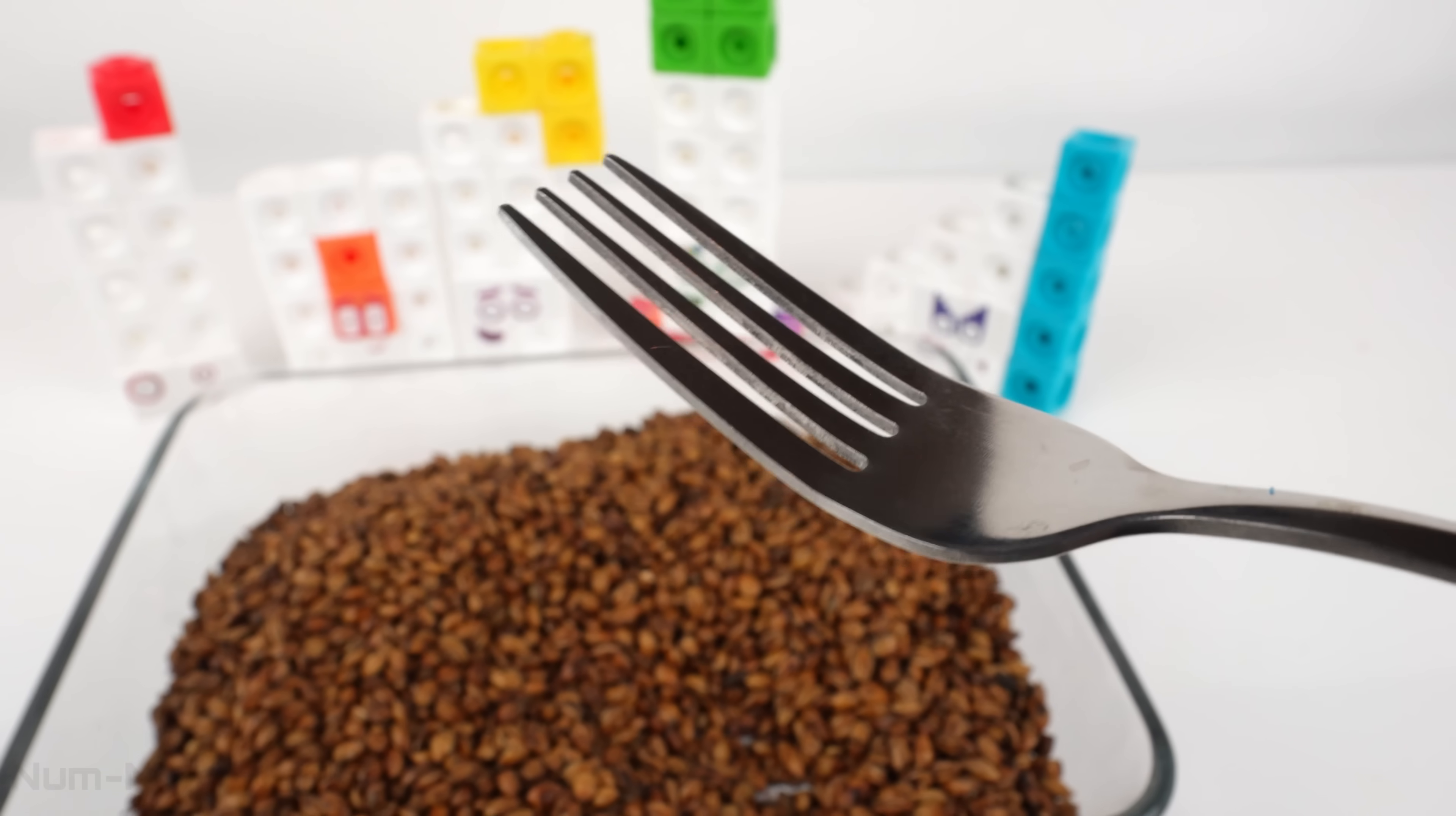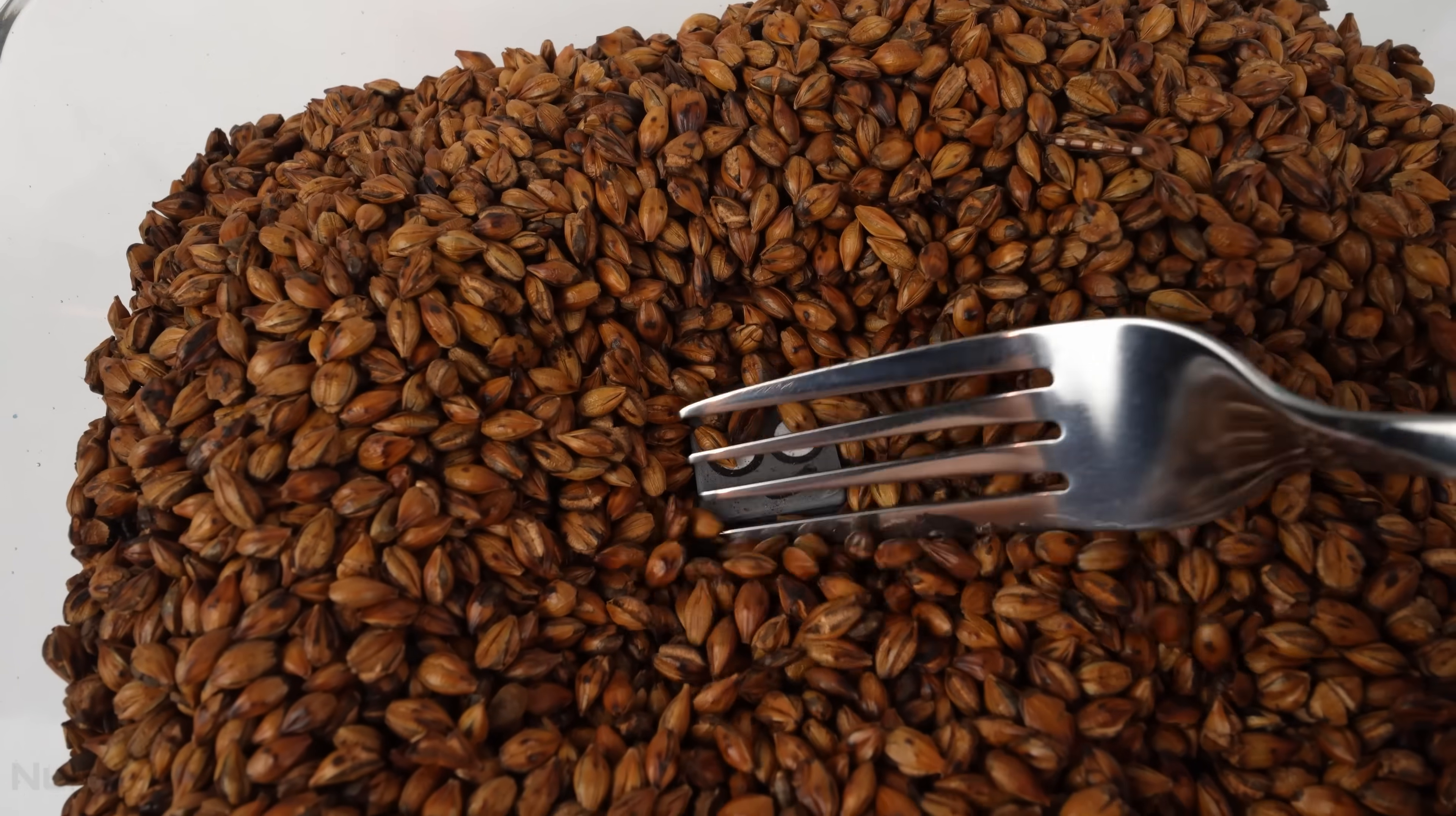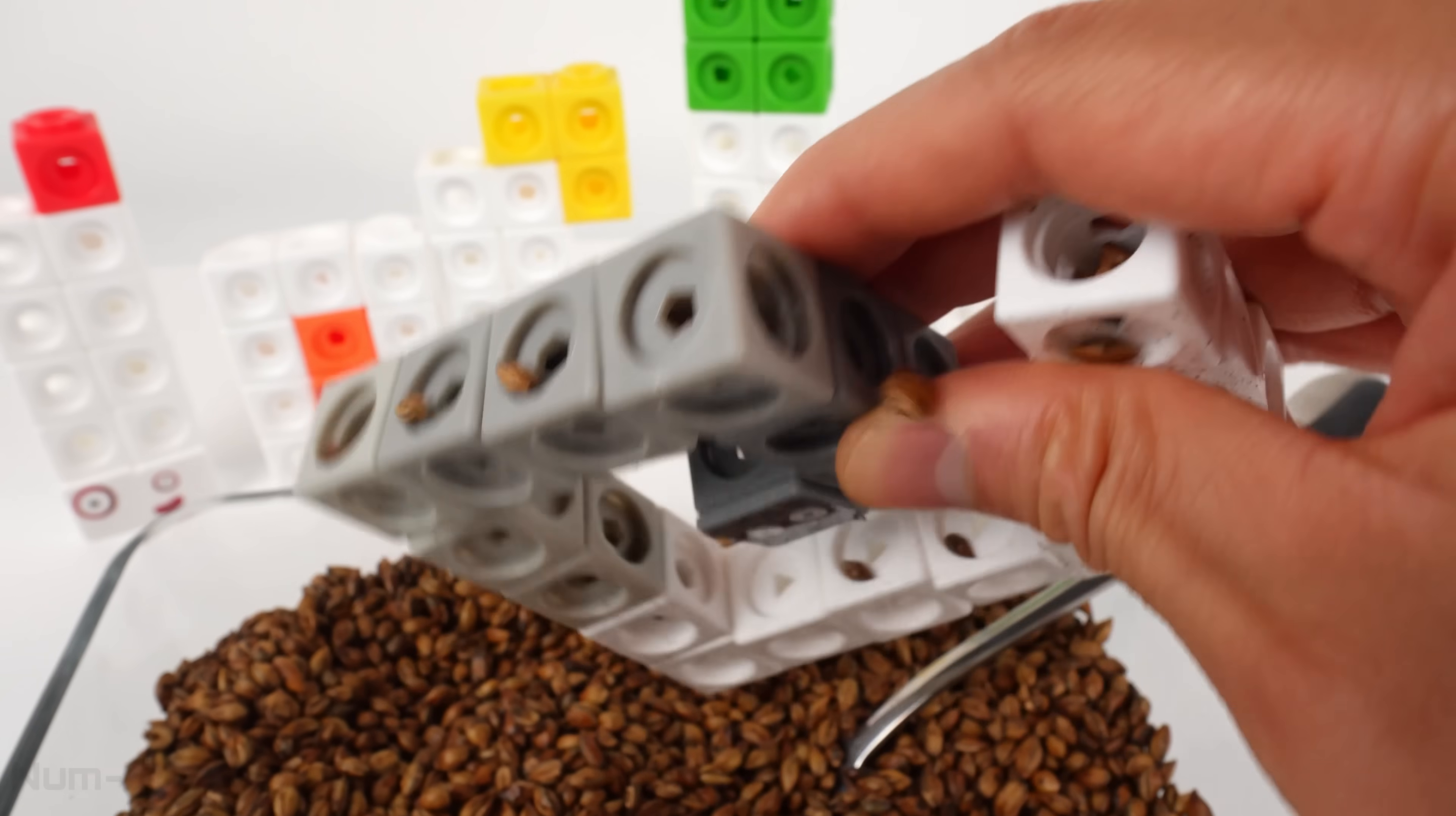I'm going to use this fork to look for our number block friends. I see a face. Let's help this number block get out. I see white blocks and grey blocks. What a unique shape.